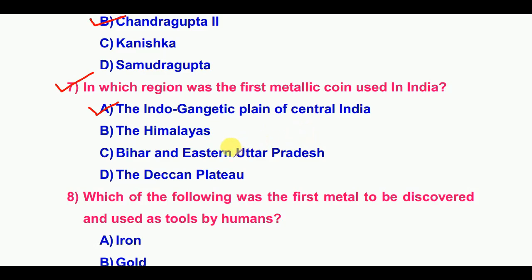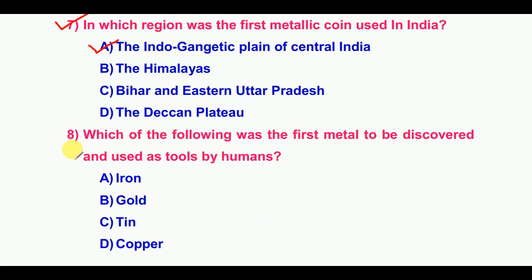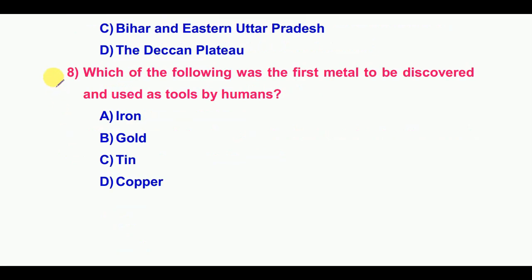Eighth question: Which of the following was the first metal to be discovered and used as tools by humans? The answer is option D: Copper.